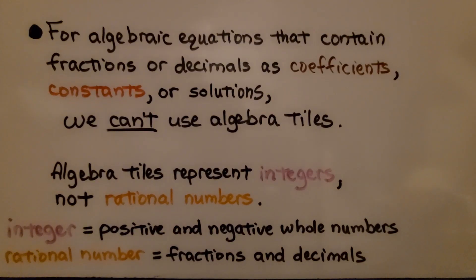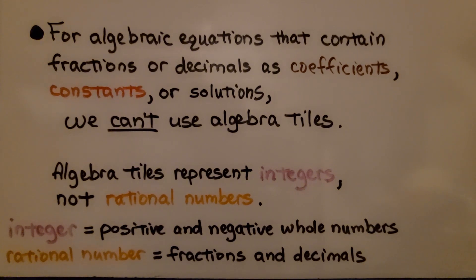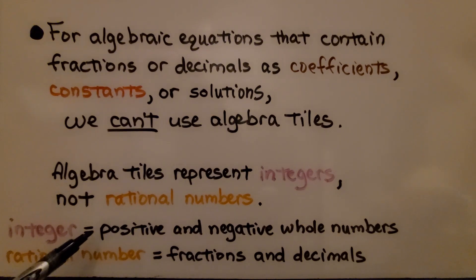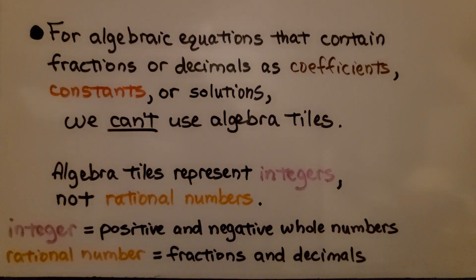For algebraic equations that contain fractions or decimals as coefficients, constants, or solutions, we can't use algebra tiles. Algebra tiles represent integers, not rational numbers. Remember: an integer is a positive and negative whole number, while a rational number includes fractions and decimals.